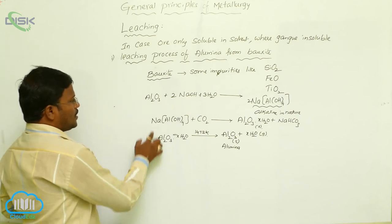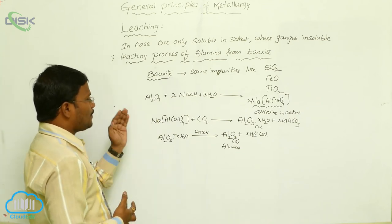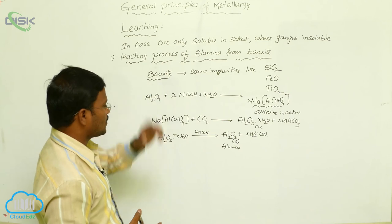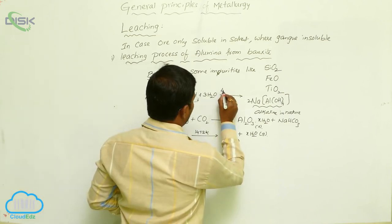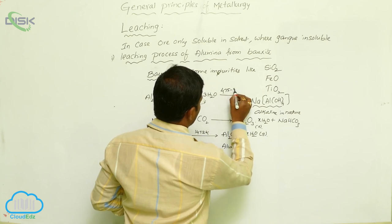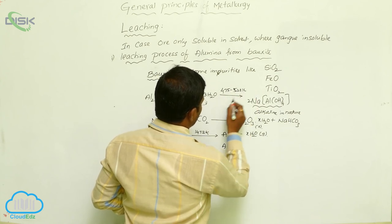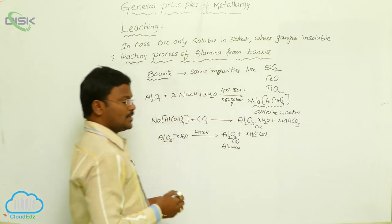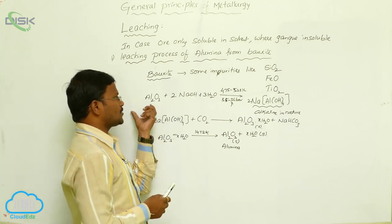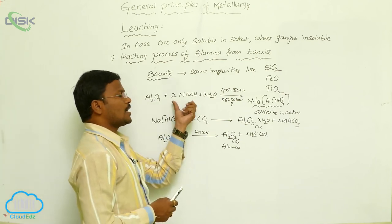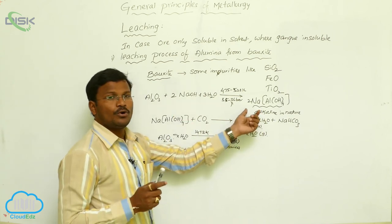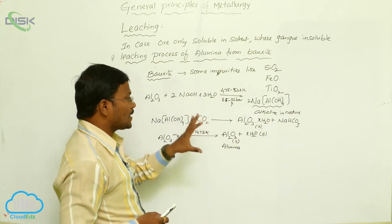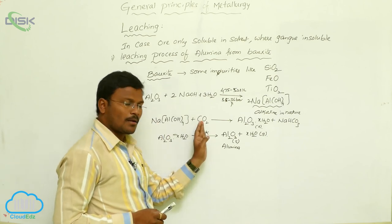In the first step, while the powdered bauxite reacts with sodium hydroxide and water, we have to maintain the temperature at nearly 475 to 523 Kelvin at 35 to 36 bar pressure. These are the conditions required to perform the reaction between bauxite and concentrated sodium hydroxide to form sodium aluminate. The formed sodium aluminate, with its alkaline character, is then reacted with carbon dioxide to eliminate its alkaline nature.